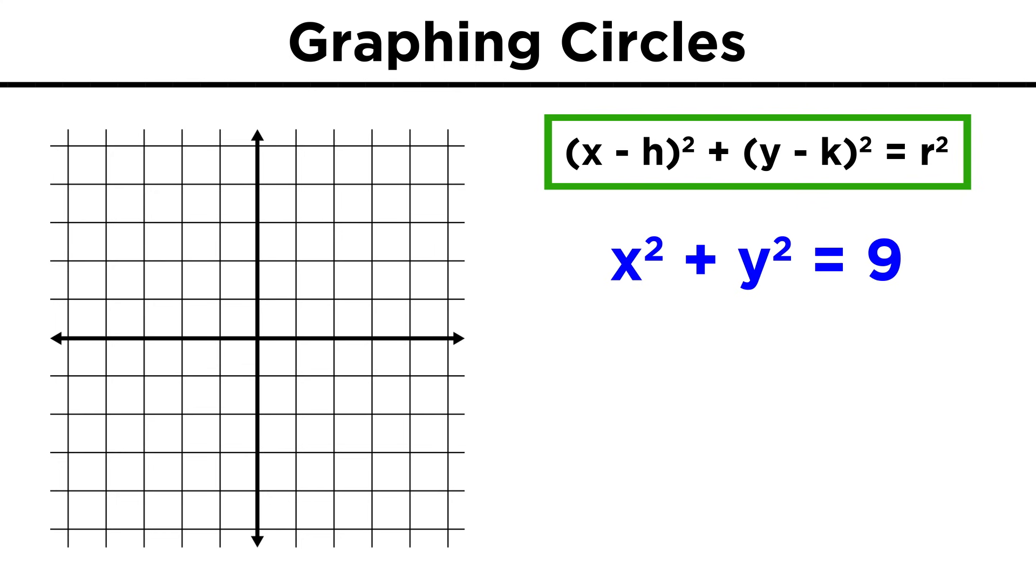Let's start with something simple, like x squared plus y squared equals nine. In this case, there are no h and k terms, so h and k must both be zero, meaning that the center of the circle is at the origin. Then R squared is nine, so the radius must be three, and there's our circle.